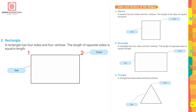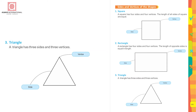And how many vertices — that means how many corners? Let's count: 1, 2, 3, 4 — yes, 4 vertices. Triangle: a triangle has 3 sides and 3 vertices. Let's count them: 1, 2, 3 — there are 3 sides. And how many corners are there? Yes, 3 corners.